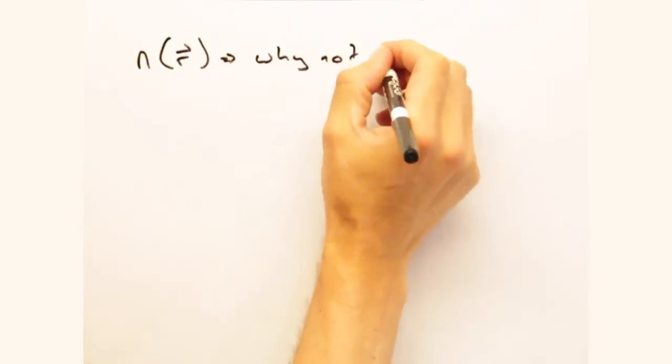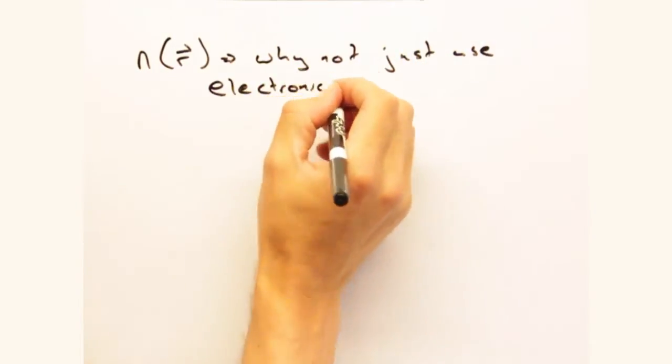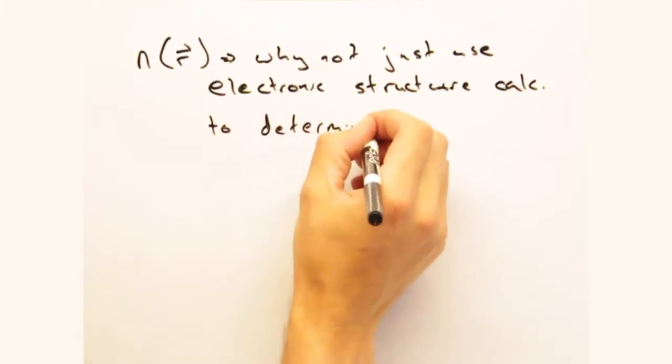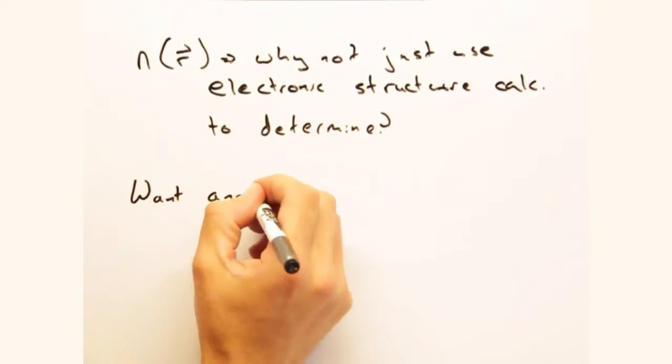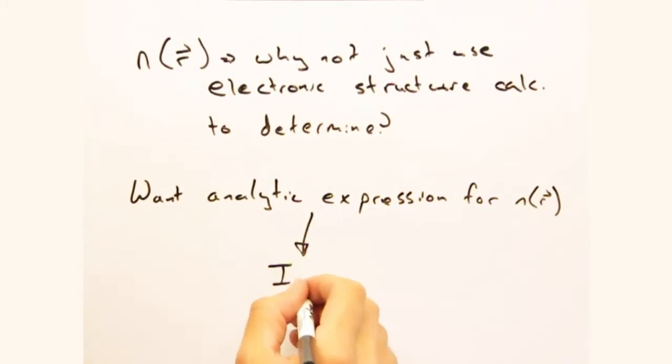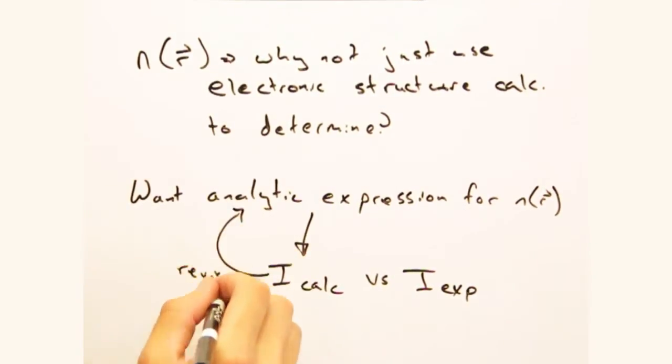But if all we care about is intensity, we could just solve for n of r from electronic calculations, and then do a numeric integration to get intensity, right? We could. However, we ultimately want an analytic expression because in practice you want to go from an intensity spectrum and solve backwards for the scattering density.